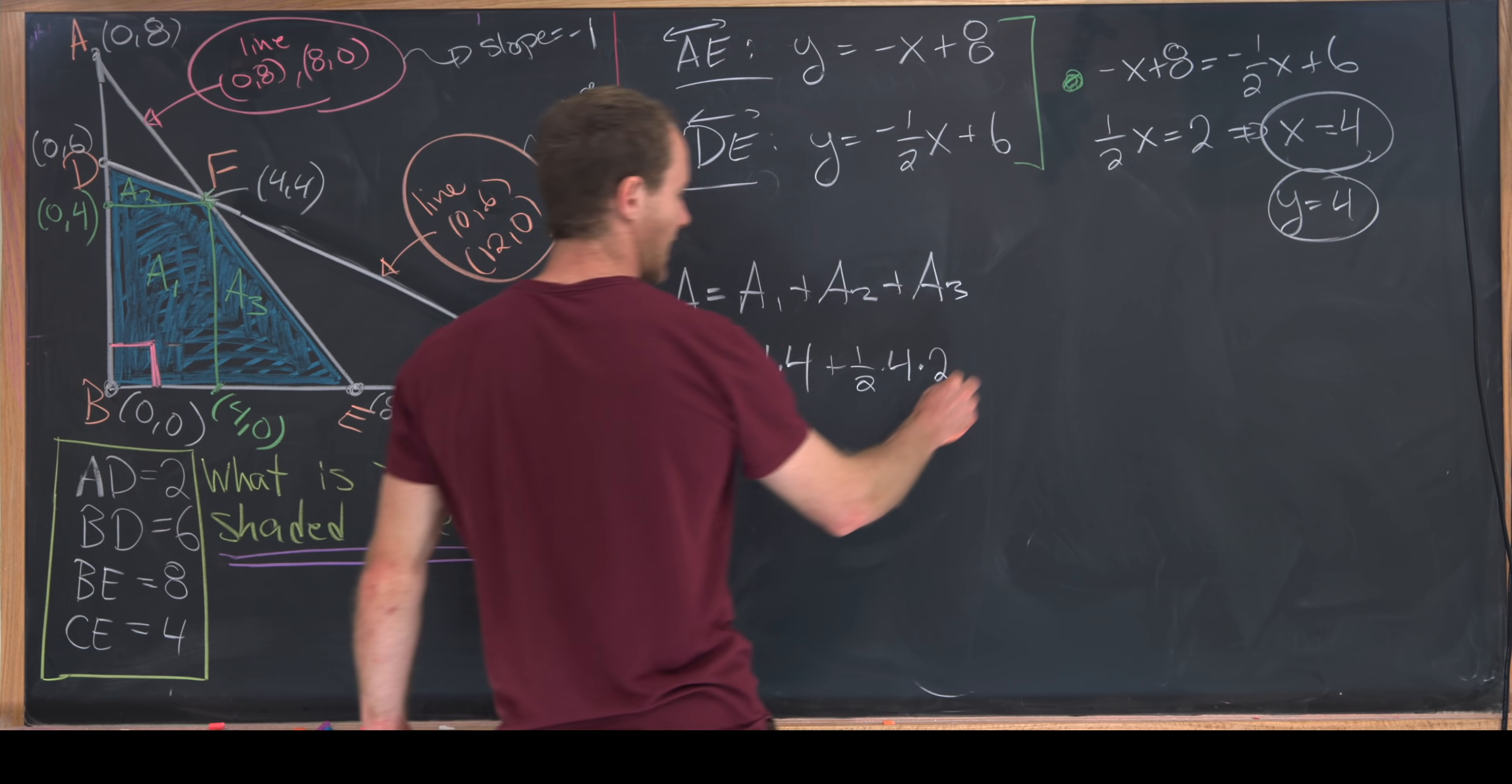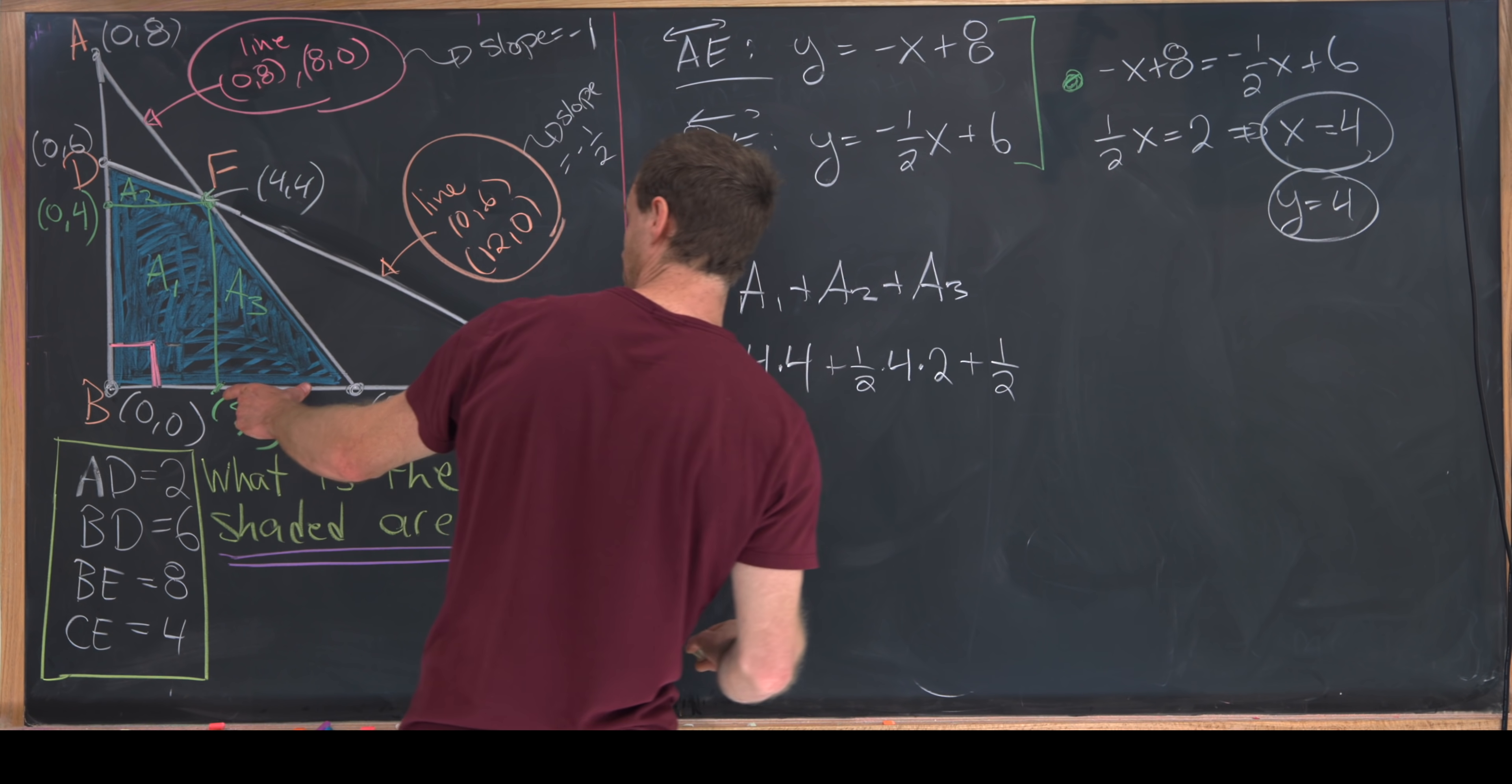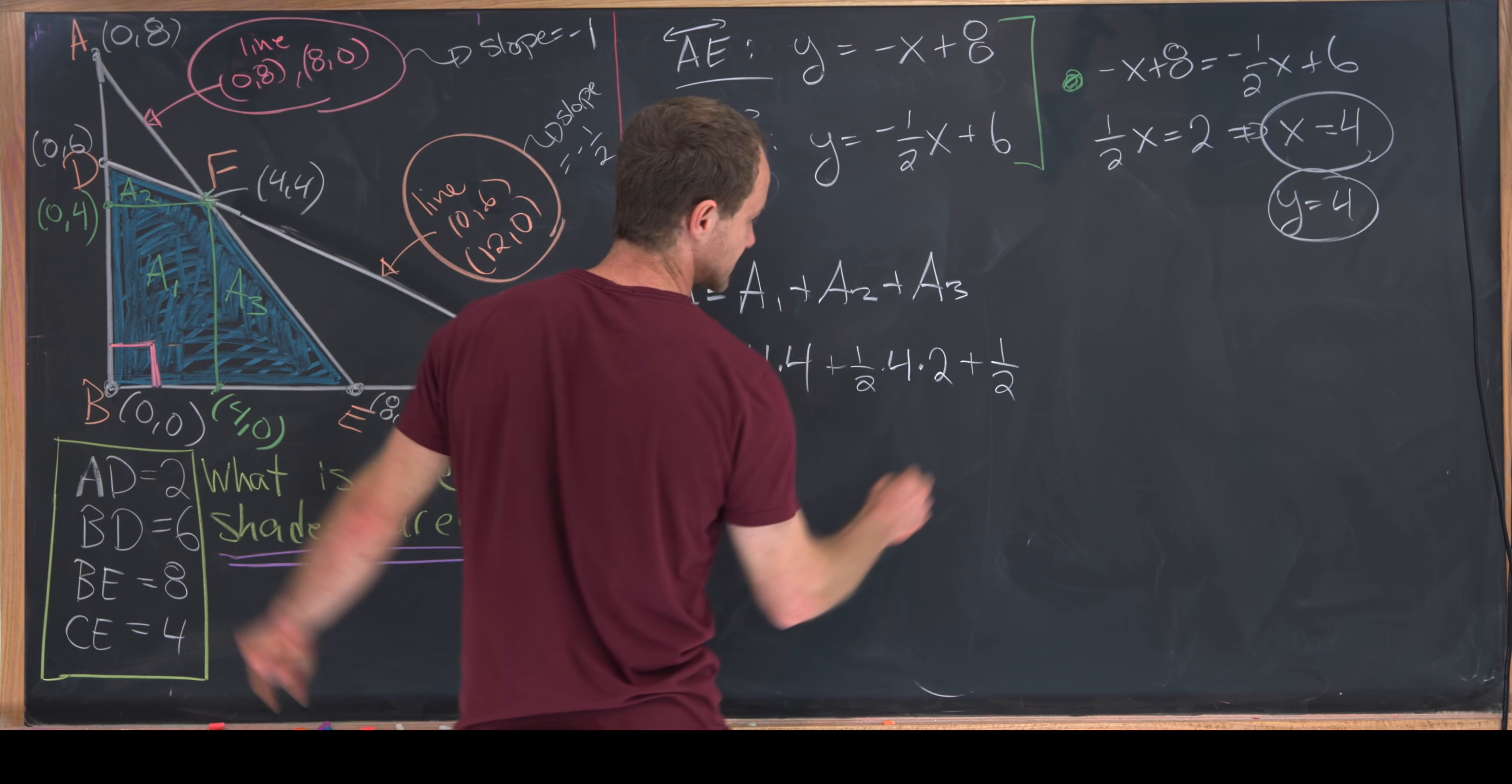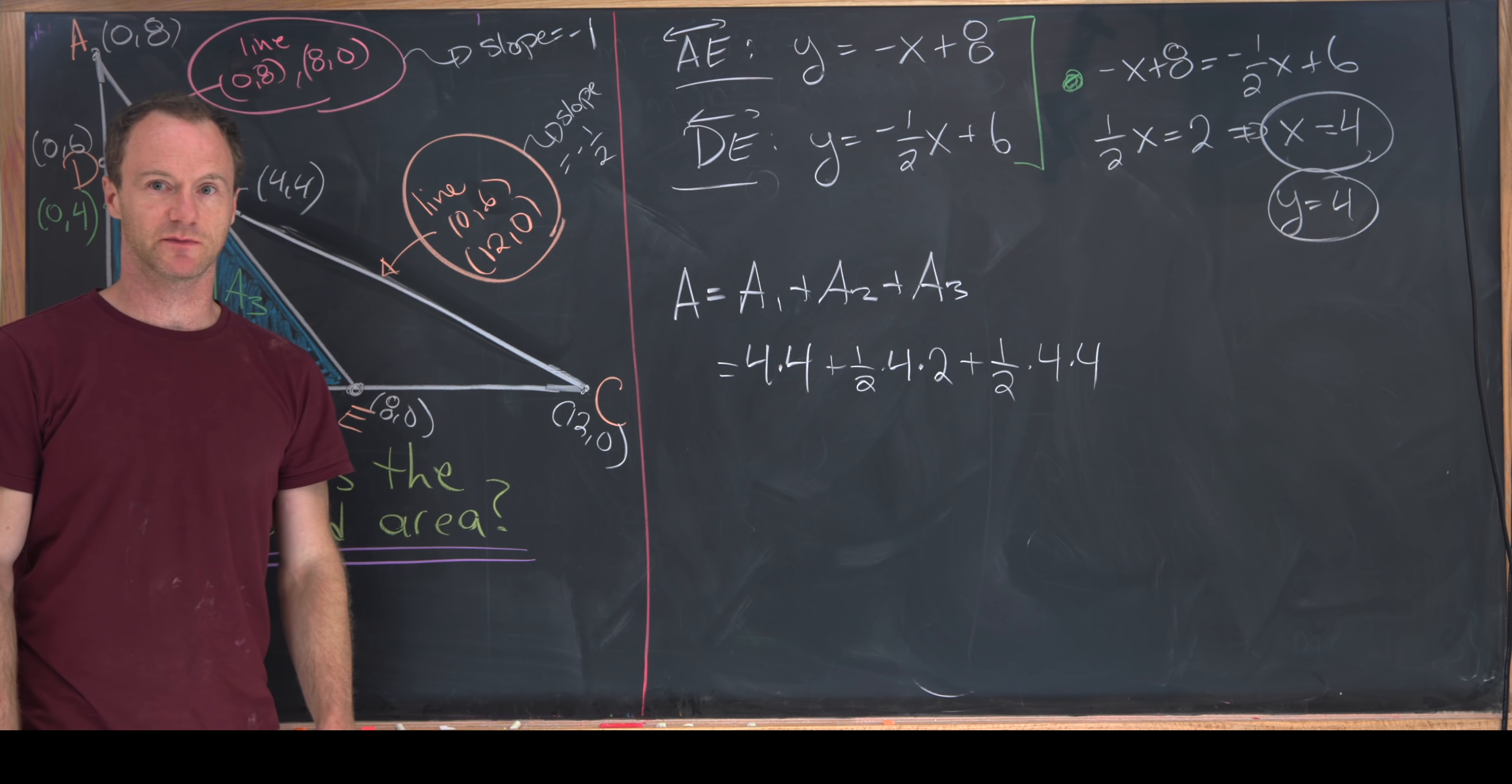And then finally area 3, well that's a triangle again, so we've got 1/2 × 4 × 4, again just taking those standard measurements.